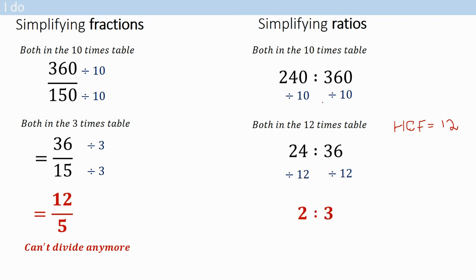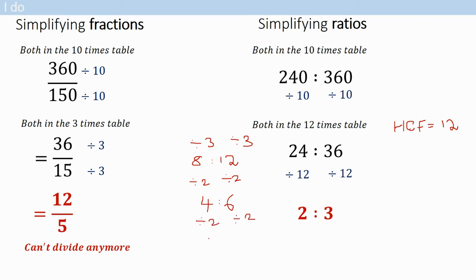So in this case the highest common factor is 12, which gives you two over three. If you did it in lots of little steps - say you divided by three - you would get eight over twelve, and then you could divide by two to give you four over six, and then divide by two again. You get the exact same answer, but look how many steps you used when you don't use the highest common factor. Pause or rewind if you need to.